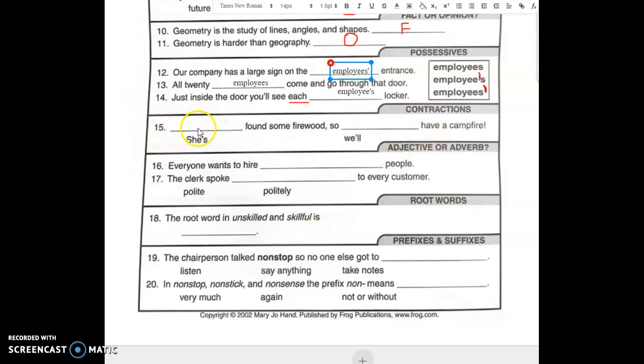Contractions. They want to know what does the word she's actually mean? Well, it means she has. She's found some firewood. So we'll, that means we will have a campfire.